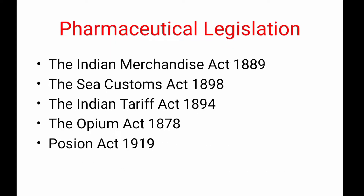The early pharmaceutical legislation in India includes: Indian Merchandise Act 1889, Sea Customs Act 1898, Indian Tariff Act 1894, Opium Act 1878, and Poison Act 1919. Later on, we will see each of these acts in a video. That is what is called pharmaceutical legislation.